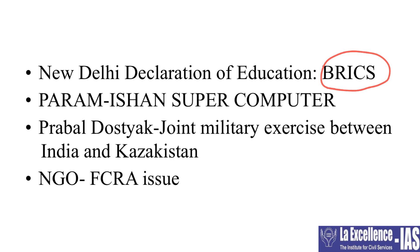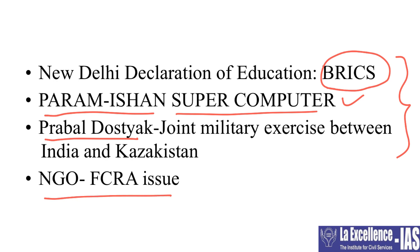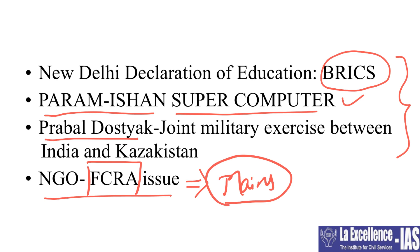The next important point is PARAM ISHAN — it is a supercomputer. Then there is a joint military exercise between India and Kazakhstan called Prabal Dostik, which is important from prelims. A lot of NGOs have actually lost their foreign regulations — that is, they cannot get funding from foreign companies, governments, or people. This was the FCRA provision and it is important from mains point of view and has been covered in the magazine as well.